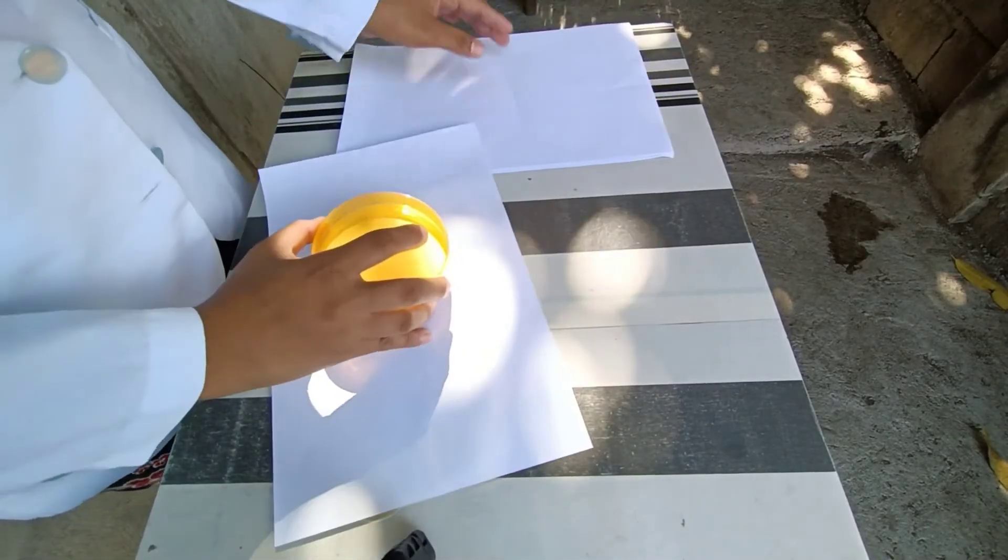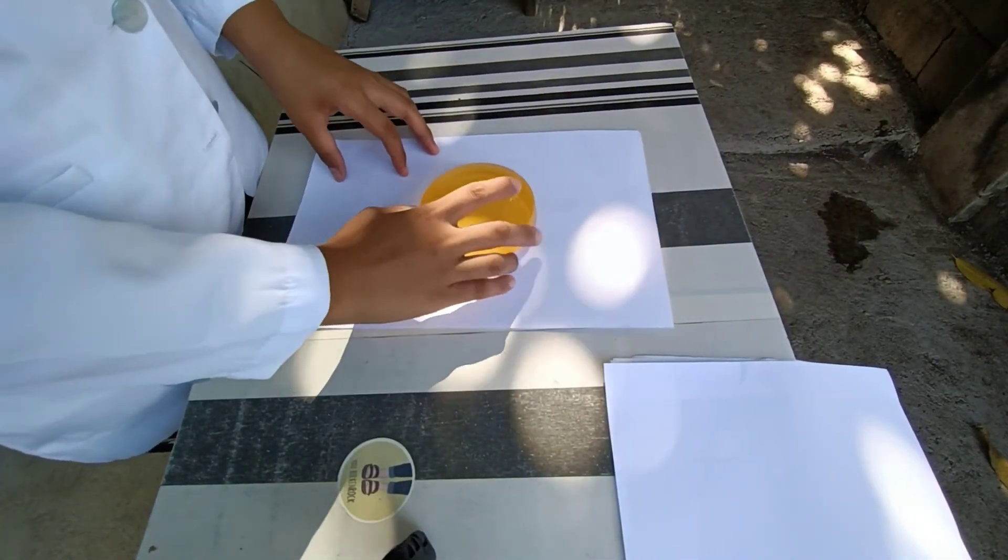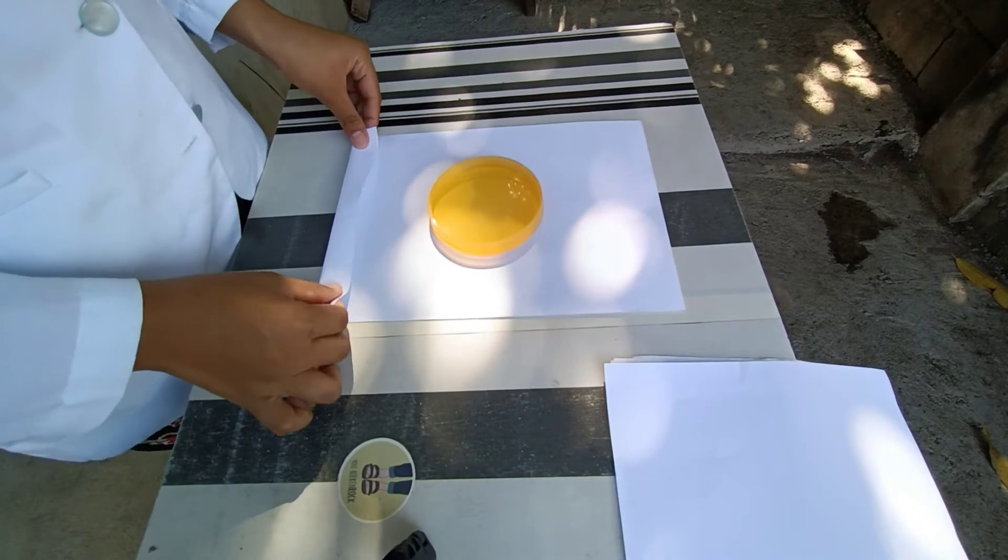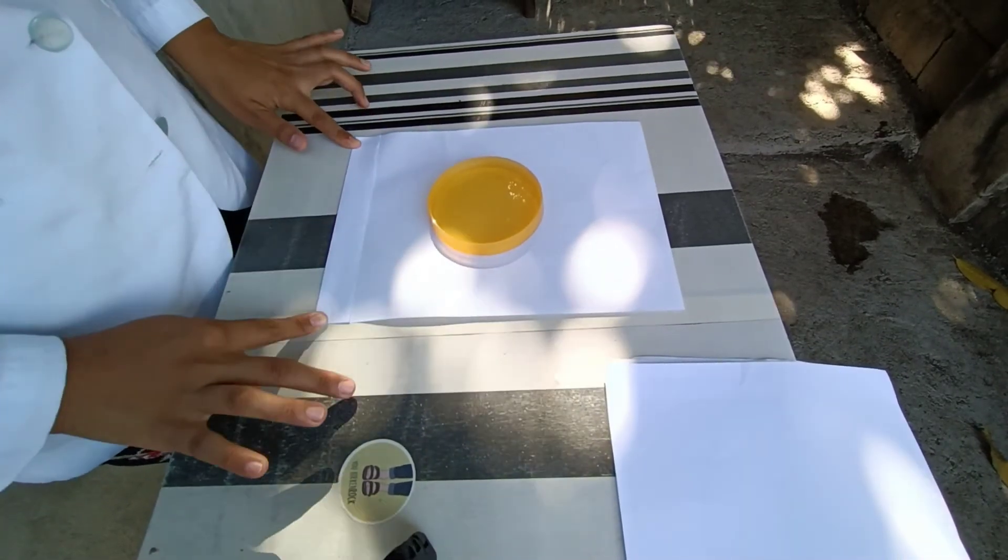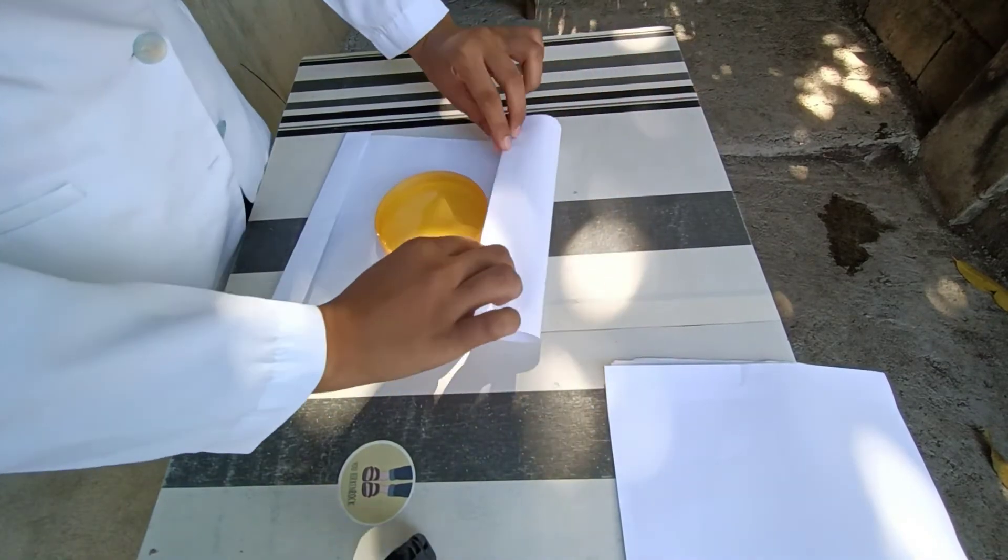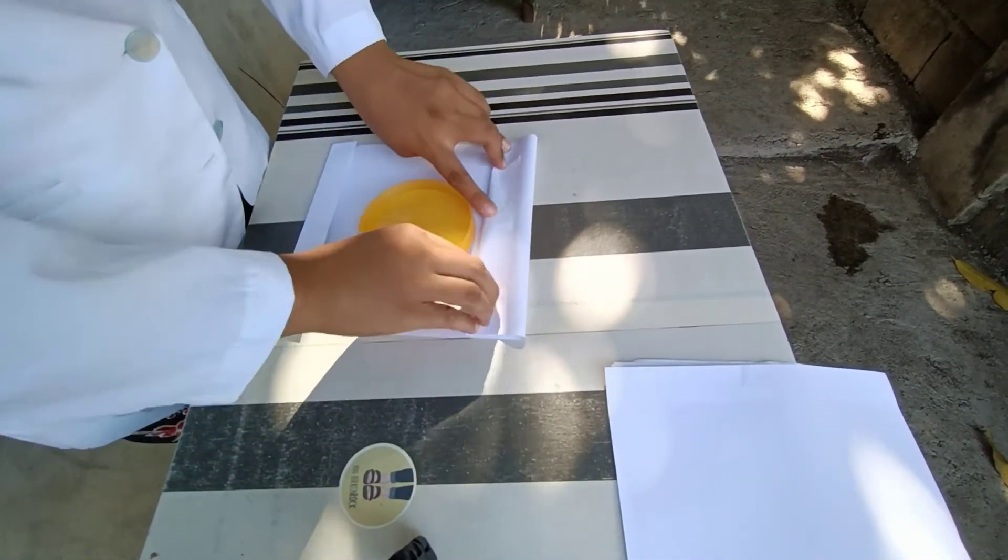Place the petri dish carefully in the center of the paper. Then fold the end of the paper approximately one inch in width. Fold the same on the other end but in the opposite direction.